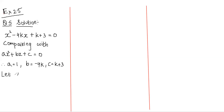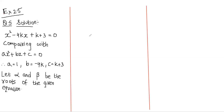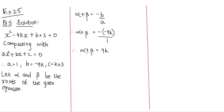Let alpha and beta be the roots of the given equation. Using alpha plus beta equals minus b upon a: alpha plus beta = minus of (-4k) upon 1, therefore alpha plus beta = 4k. For the product of roots, alpha into beta = c upon a = (k + 3) upon 1, which is k + 3.